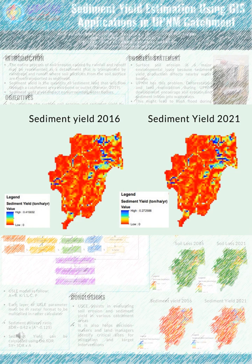The spatial distribution of sediment yield that occurred in 2016 and 2021 is shown in the figures. According to the sediment yield map for 2016, the blue area has the highest value of sediment yield at 0.413852 tonnes per hectare per year, demonstrating that a portion of the watershed is experiencing a severe state of soil erosion. The light blue shaded areas represent a middle range of sediment yield, while the red section — the largest area in the catchment — has a lower sediment yield. UPNM catchment contributes about 0.272588 tonnes per hectare per year of sediment yield to the UPNM water body in 2021, which is slightly lower than in 2016. Heavy rainfall in 2016 can be the reason why sediment yield in 2016 is higher than in 2021.